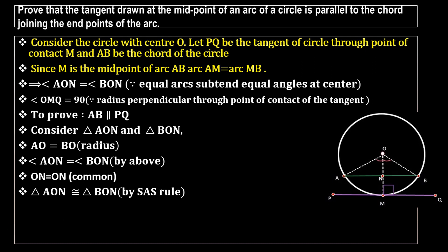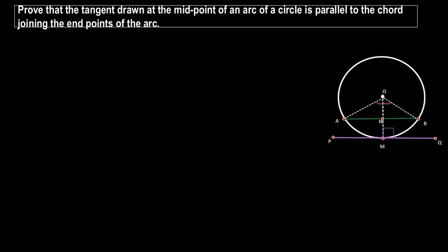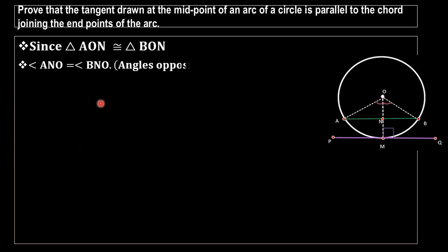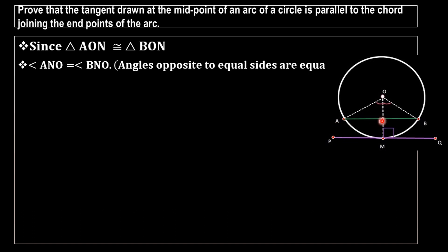Since the two triangles are congruent, we can say angle ANO equals angle BNO. These two angles are equal because angles opposite to equal sides are equal — specifically, OA equals OB, so angle ANO equals angle BNO.